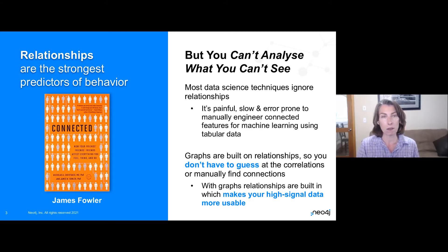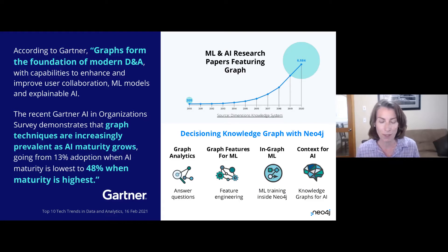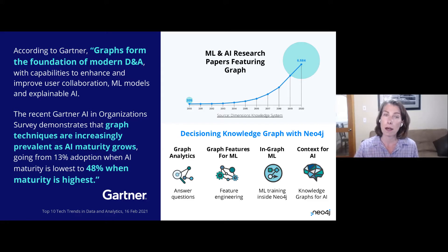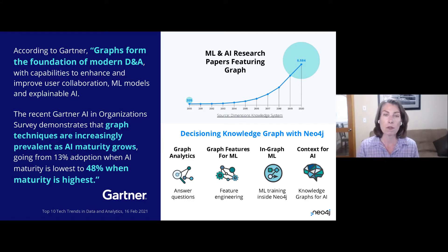But with graphs, because they're built on relationships, you don't have to guess at this correlation or manually find these connections and try to put them in the right format. The graphs actually contain and are built on the relationships. So you get that high-signal information — more usable, more machine learning and analytics friendly. And this isn't just us trying to find a new use for graphs; we're seeing this in the research community. In machine learning and AI research, you can see that around 2017 it really took off — featuring graphs for machine learning and AI research.